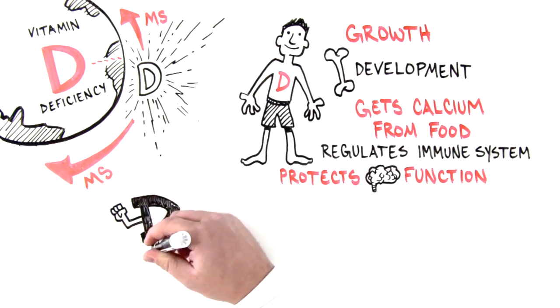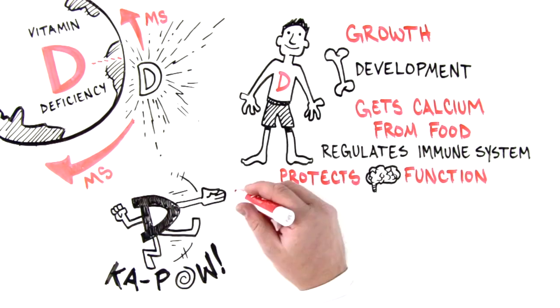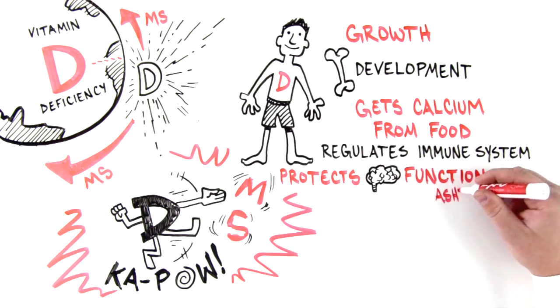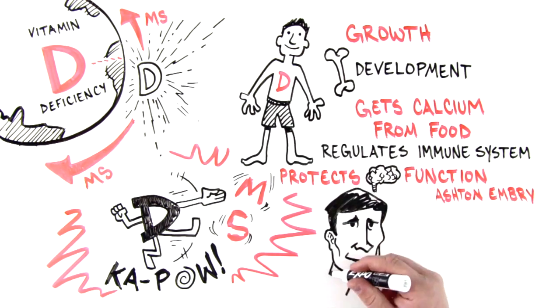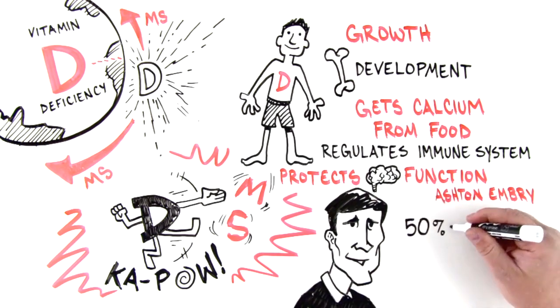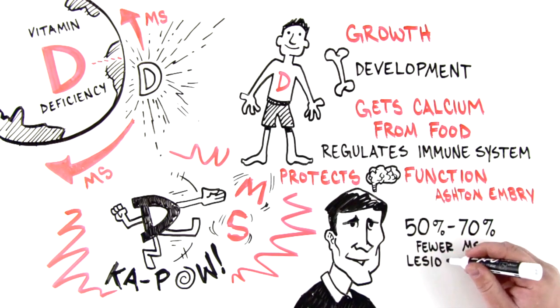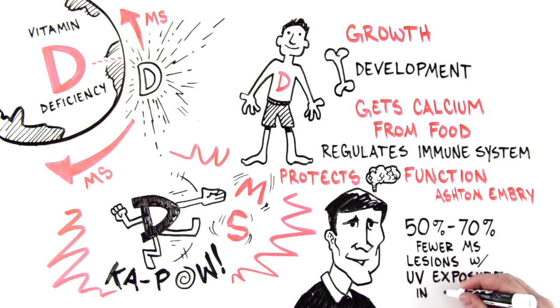Its deficiency plays a major role in diseases like MS. Ashton Embry, a preeminent Canadian researcher who specializes in the MS and vitamin D connection, suggests there is a 50-70% reduction in MS lesions when UV exposure is at its maximum in summer compared to winter.